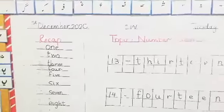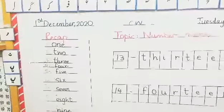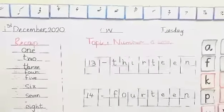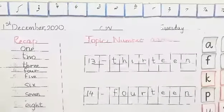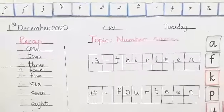First of all, tell me what is the date today? Today is 1st December 2020. Well done. What is the date today? 1st December 2020. And what day is today? Yes, today is Tuesday. What day is today? Today is Tuesday. Well done.